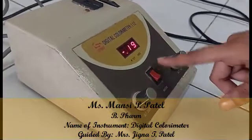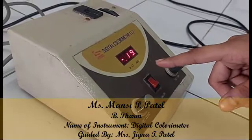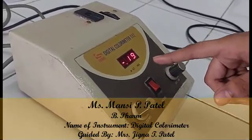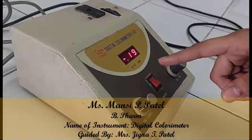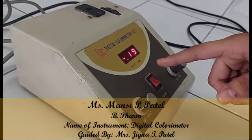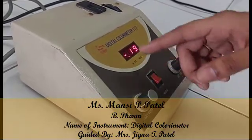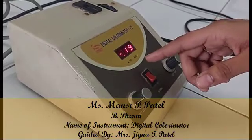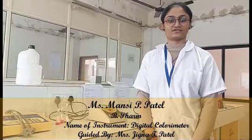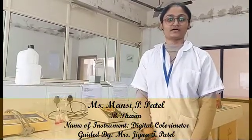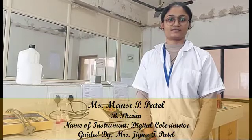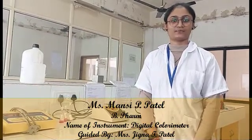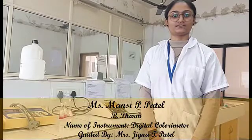Then switch the calibration to absorbance. A colorimeter is an instrument which is used to measure the concentration of the solute in a sample. Absorbance is directly proportional to the concentration of a sample.